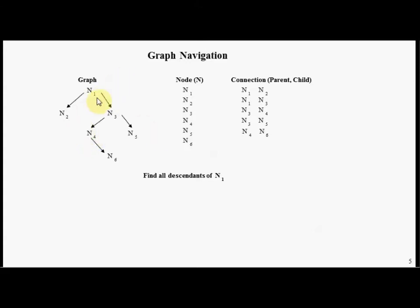For example, let's assume in this graph we would like to know all of the descendants starting from node N1. There are three classic approaches to navigating graphs using relational database technology. The first is what I'll call a brute force approach. A second approach uses something called recursion. And the third approach uses something called transitive closure.